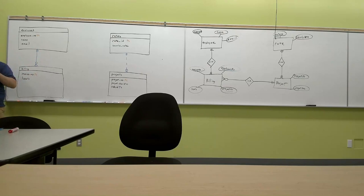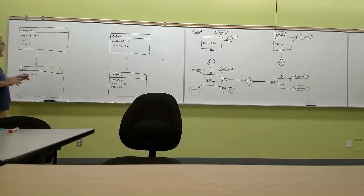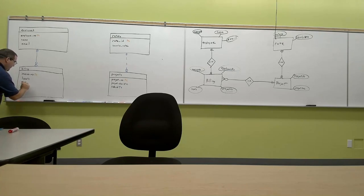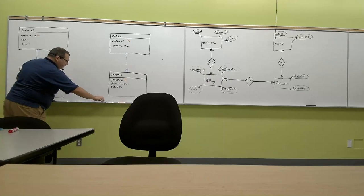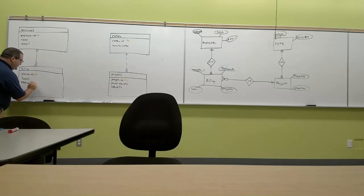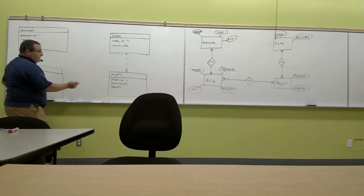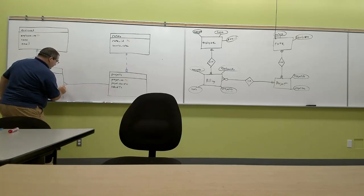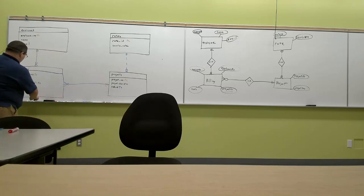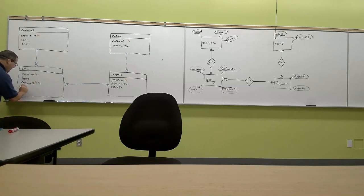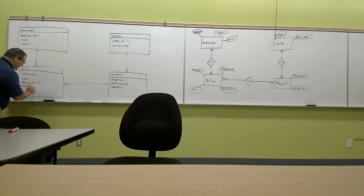Identifying means that the foreign key participates in the primary key. So now I'm going to add employee number. Employee number is part of the primary key, but it's also a foreign key — which also means this is a weak entity, because it can't exist without the rest. And our last relationship is the project — like such. And we have project number, which again is part of the primary key, and it's also a foreign key.